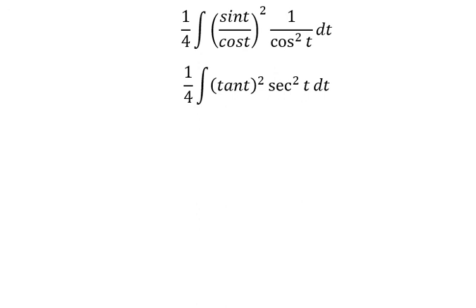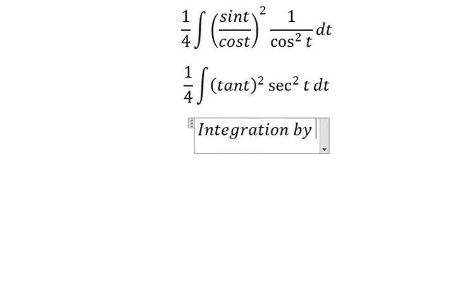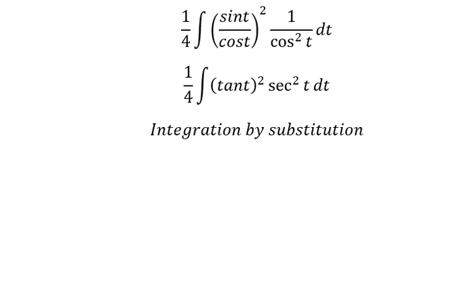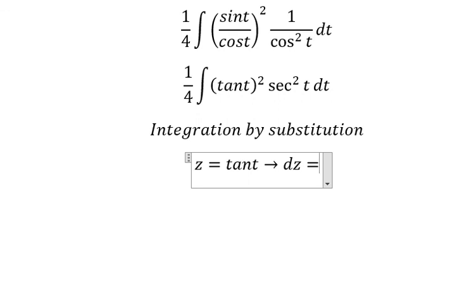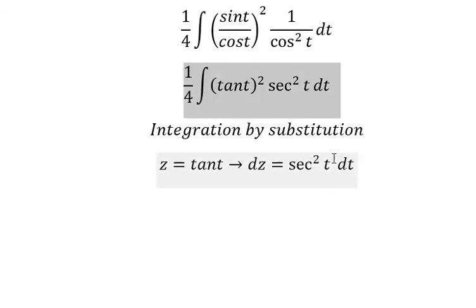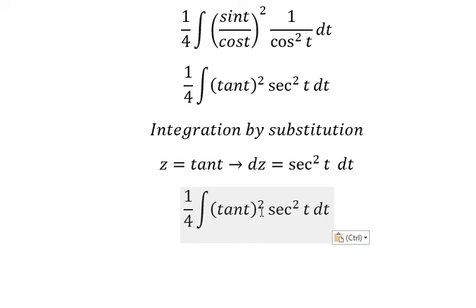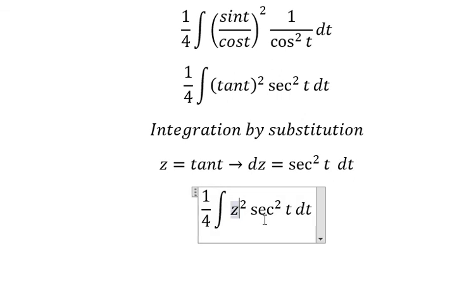Now we can use integration by substitution. I will put z equal to tan(t). Taking the derivative of both sides, we get dz equals sec²(t) dt. So we replace tan(t) with z and sec²(t) dt with dz.